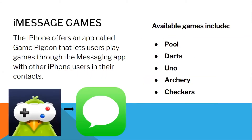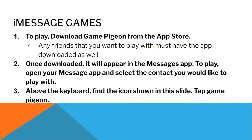There are also iMessage games. The iPhone offers an app called Game Pigeon that lets users play games through the messaging app with other iPhone users in their contacts. Some available games include pool, darts, uno, archery, checkers, and more. To play, download Game Pigeon from the App Store — any friends you want to play with must have the app downloaded as well. Once downloaded, it will appear in the Messages app. Open your Messages app and select the contact you would like to play with. Above the keyboard, find the icon shown on the next slide and then tap Game Pigeon.